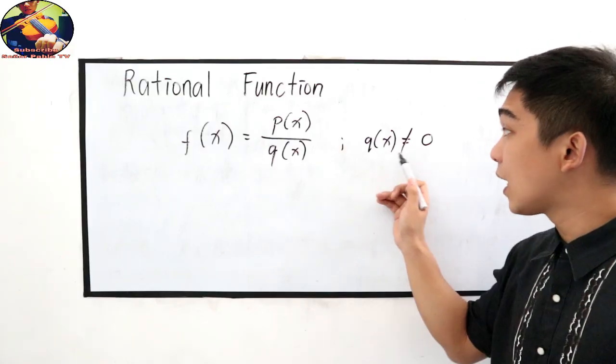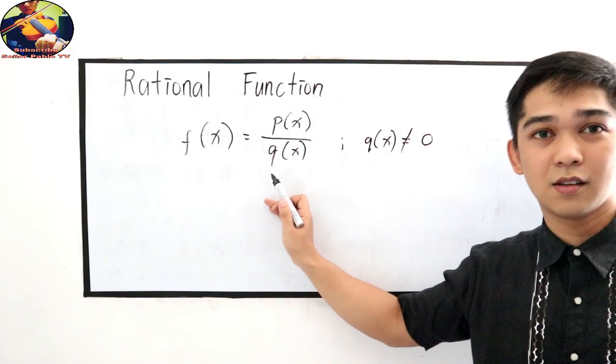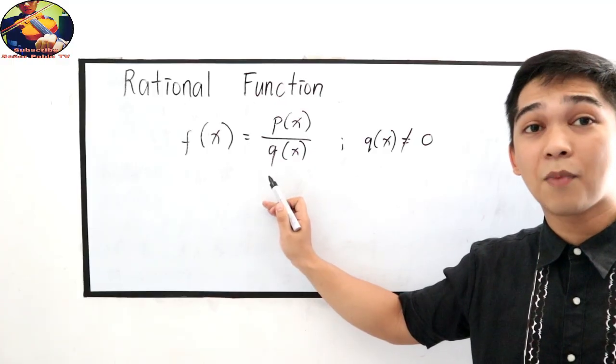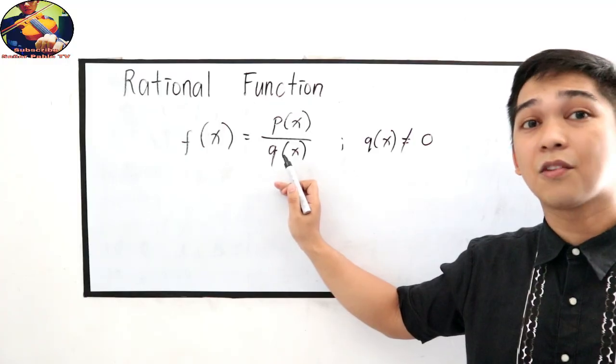Bakit hindi pwede maging equal kay 0 si q(x)? Kasi pag magkakawal tayo ng 0 denominator, magiging undefined na siya.